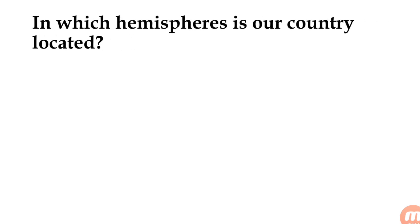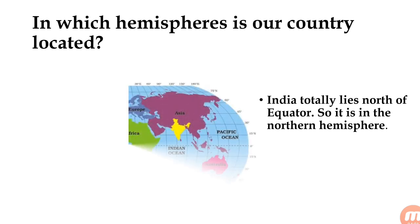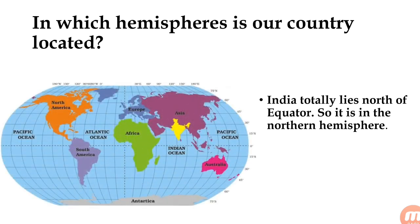In which hemisphere is our country located? India totally lies north of the equator, so it is in the northern hemisphere. Here on the map you can see the yellow color which shows our India, which comes in the northern hemisphere. The Asia continent totally comes in the northern hemisphere.